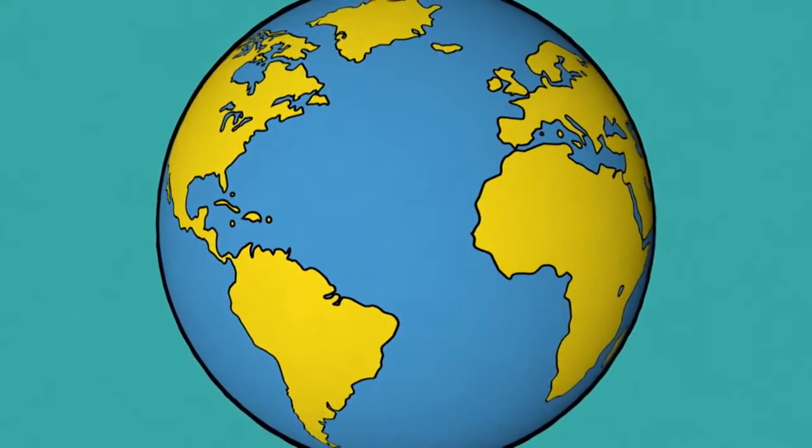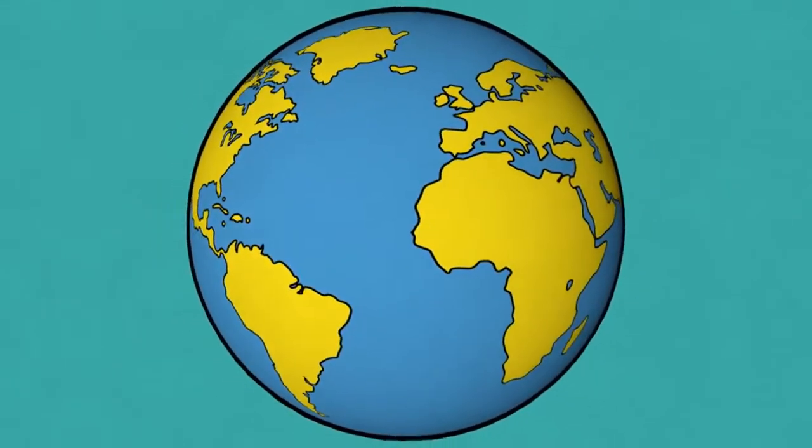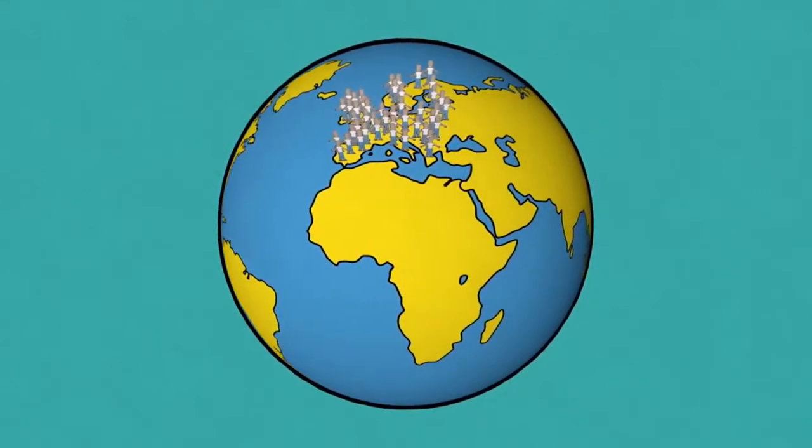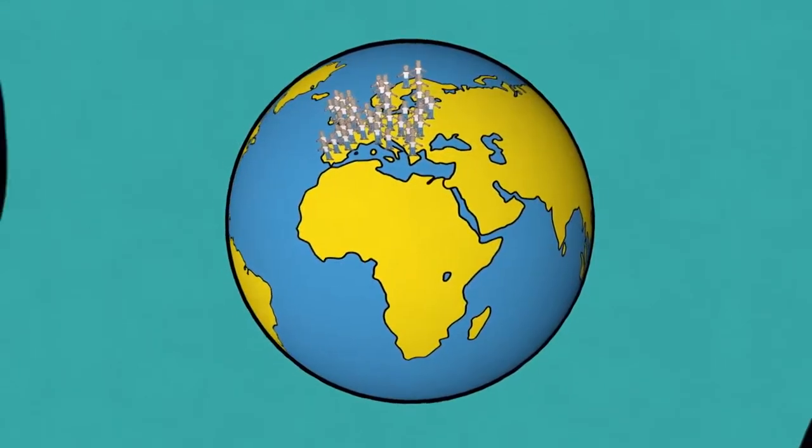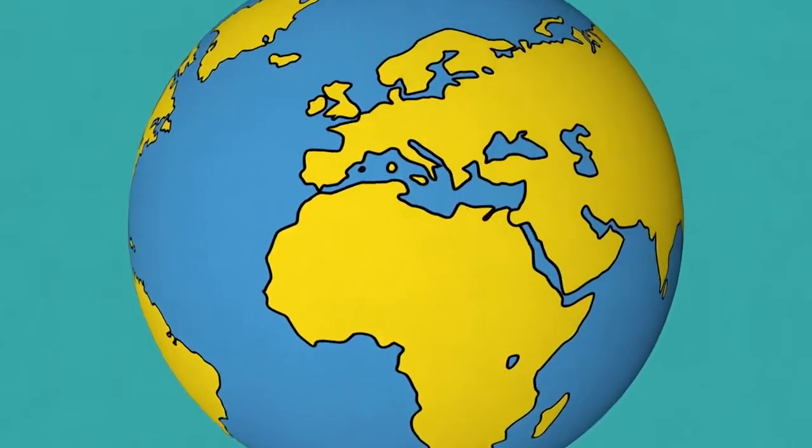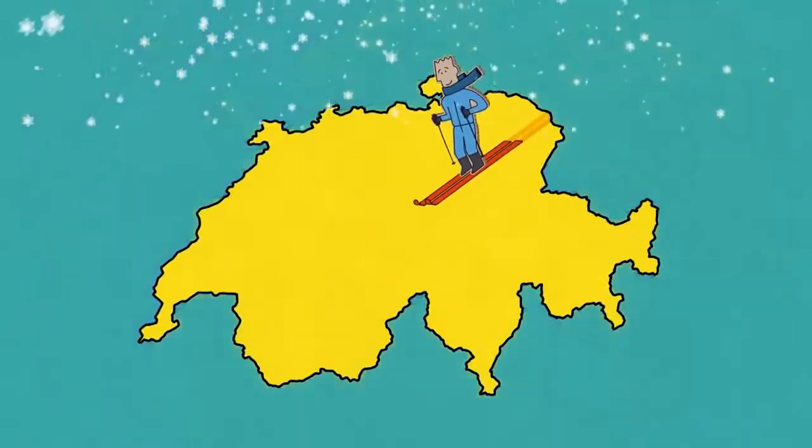But how can corrugated packaging bring economic benefits to society as a whole? Well, we're a big industry. We have 750 plants across Europe and protect around 75 percent of European goods being transported. In fact, every year we produce over 42 billion square meters of corrugated board. That's an area the size of Switzerland.